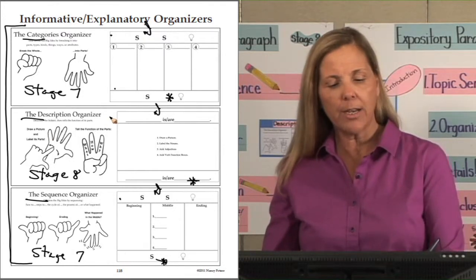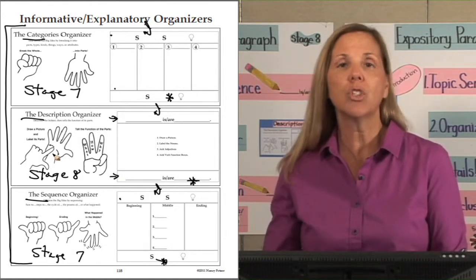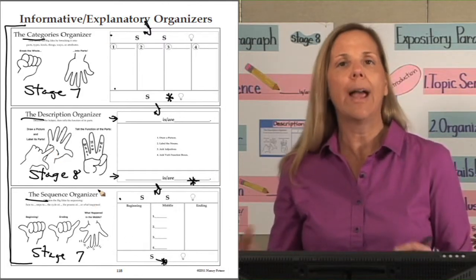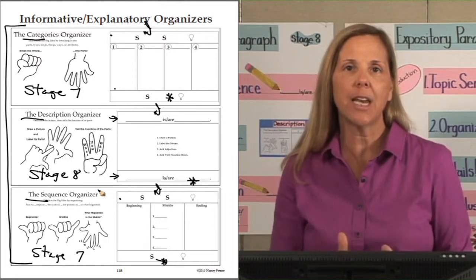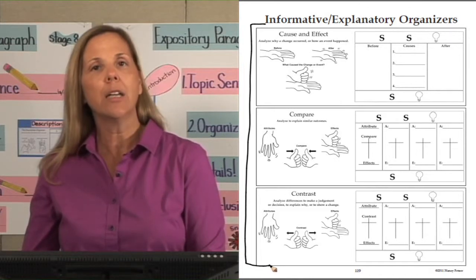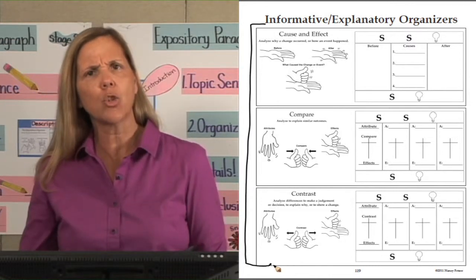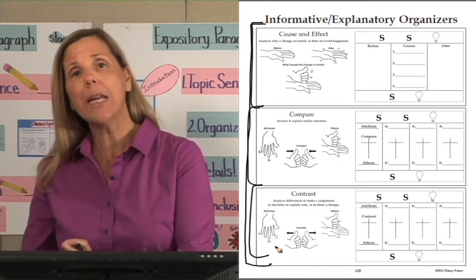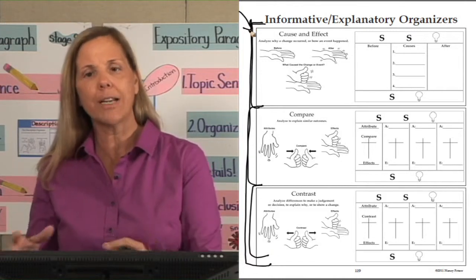Description has a different topic sentence and conclusion, so it's been given its own separate teaching at Stage 8. All three organizers will have hooks and Snappy Endings, meaning we're adding more to student writing at these stages. Looking at the opposite page, you'll notice the remaining three organizers—there's a total of six within the informative explanatory writing section: cause and effect, compare and contrast. Once you master the first three, you start working on mastering the last three.